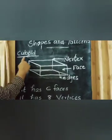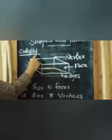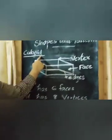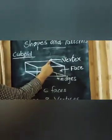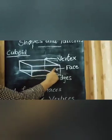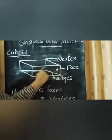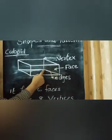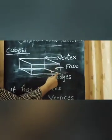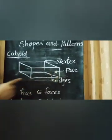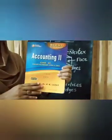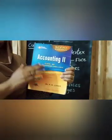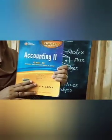Next, Cuboid. A Cuboid has 8 Vertices, 6 Faces, and 12 Edges. All of you look at this textbook — it is a solid shape. It is a Cuboid.